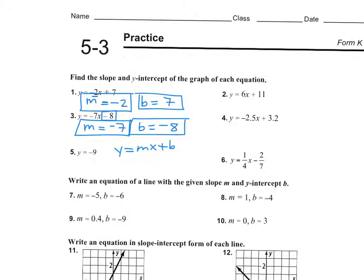How did we get rid of it? If I wanted to multiply by something to get rid of it, what do I multiply by? Zero. Right — zero times x is zero, the x went away. So when a problem looks like this where there is no mx, that means your m, your slope, was zero and it got rid of our x. So if you see a problem where it's just y equals a number, your slope is zero. That's a horizontal line.